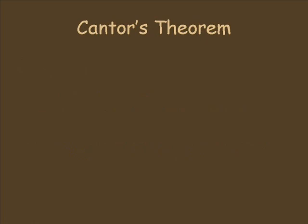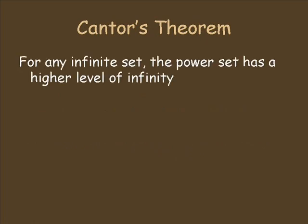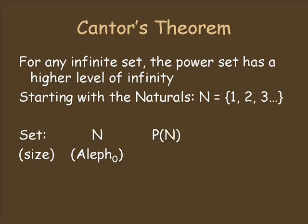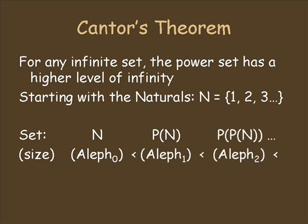Cantor showed in his famous theorem that applying the power set idea to infinite sets leads to higher sizes of infinity. So, beginning with the lowest size infinity, which we've been calling aleph naught, we can take the set of all subsets and get a new set with a higher infinite size, which we'll call aleph 1. Then we can take the power set of this set to make another set with higher infinity still, and so on.